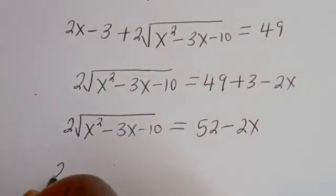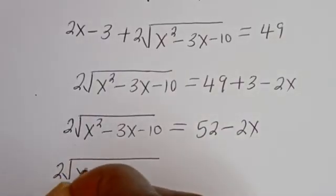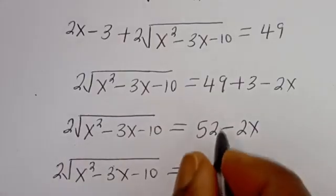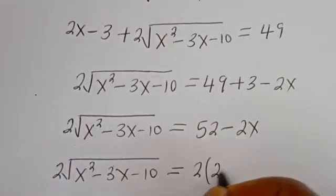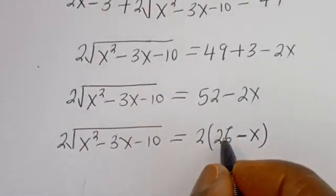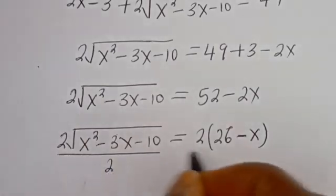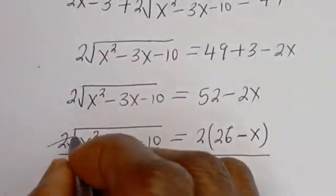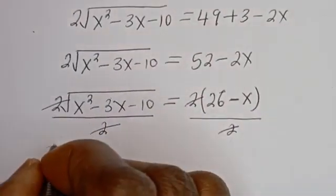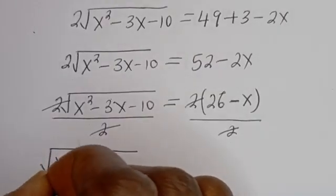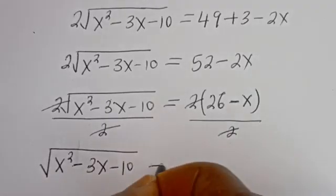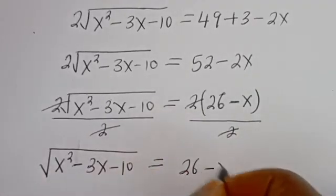Then we have 2 times square root of s squared minus 3s minus 10, equal to 2 times bracket 26 minus s. Divide both sides of this equation by 2, and we get square root of s squared minus 3s minus 10, equal to 26 minus s.